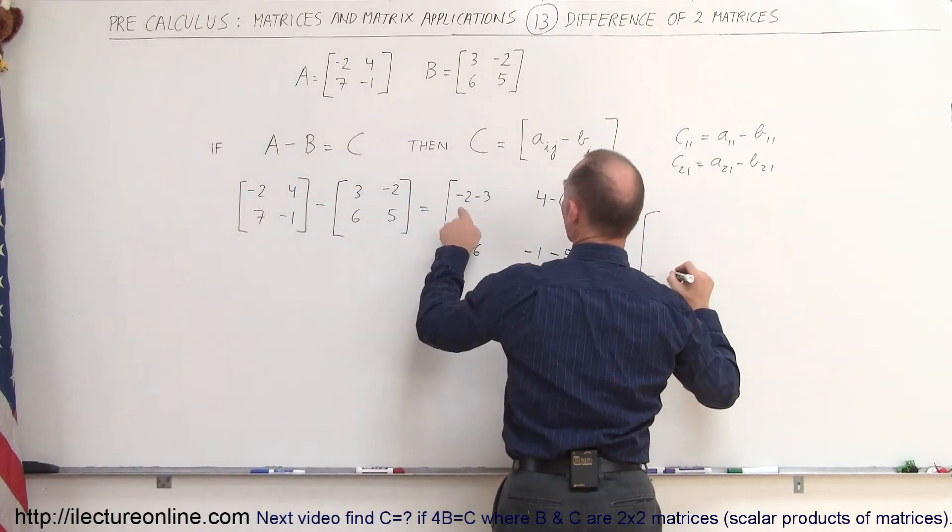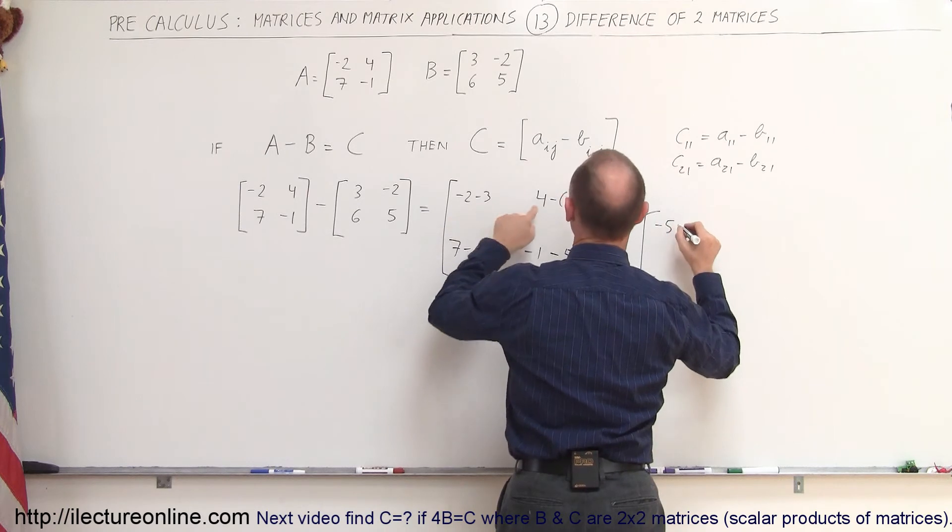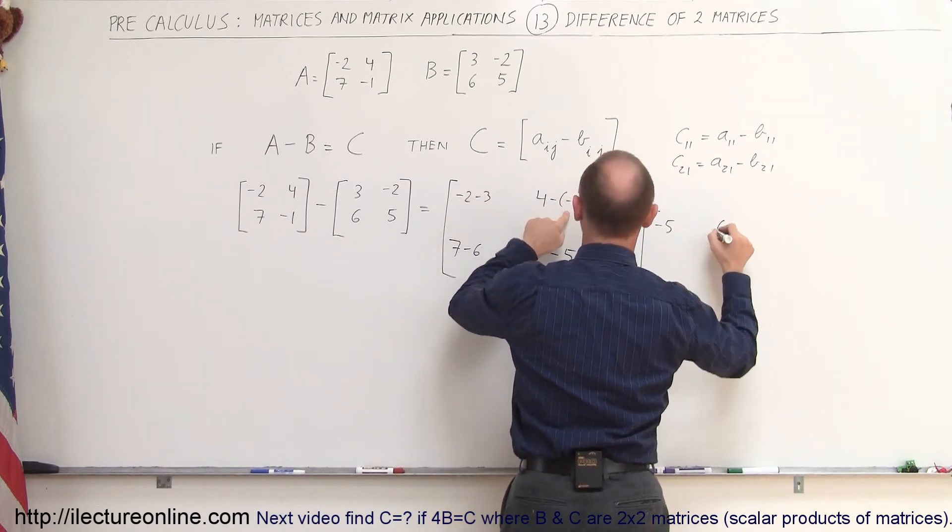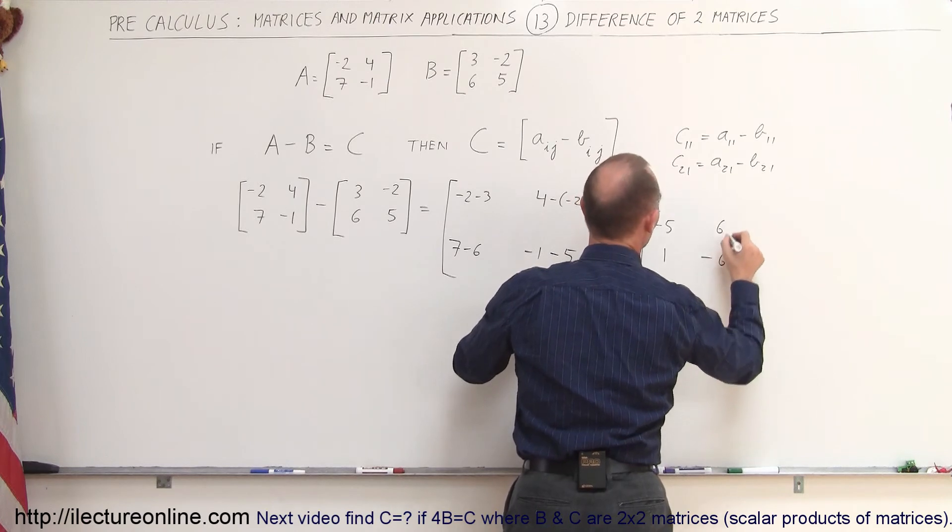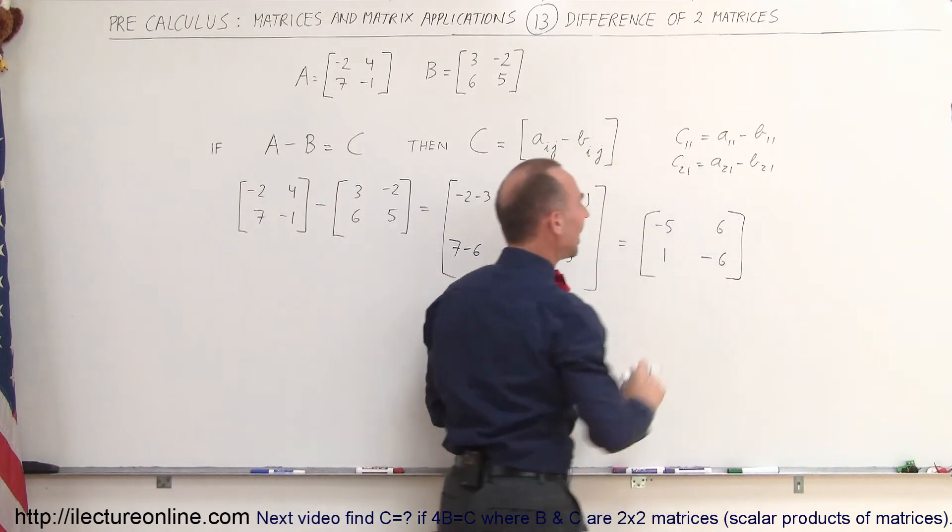And then we simply go through the procedure of subtracting these and we get minus 2 minus 3 is a minus 5. 4 minus a minus 2 is 6. 7 minus 6 is a 1. And minus 1 minus 5 is a minus 6. And that would then be A minus B.